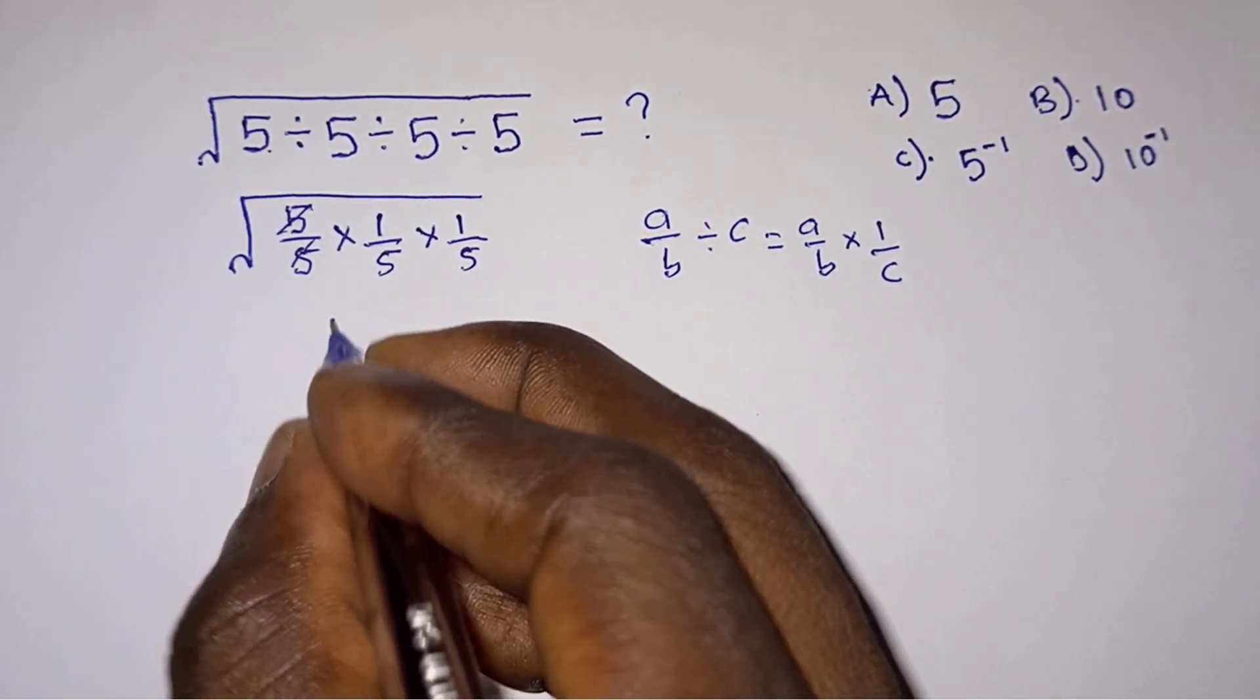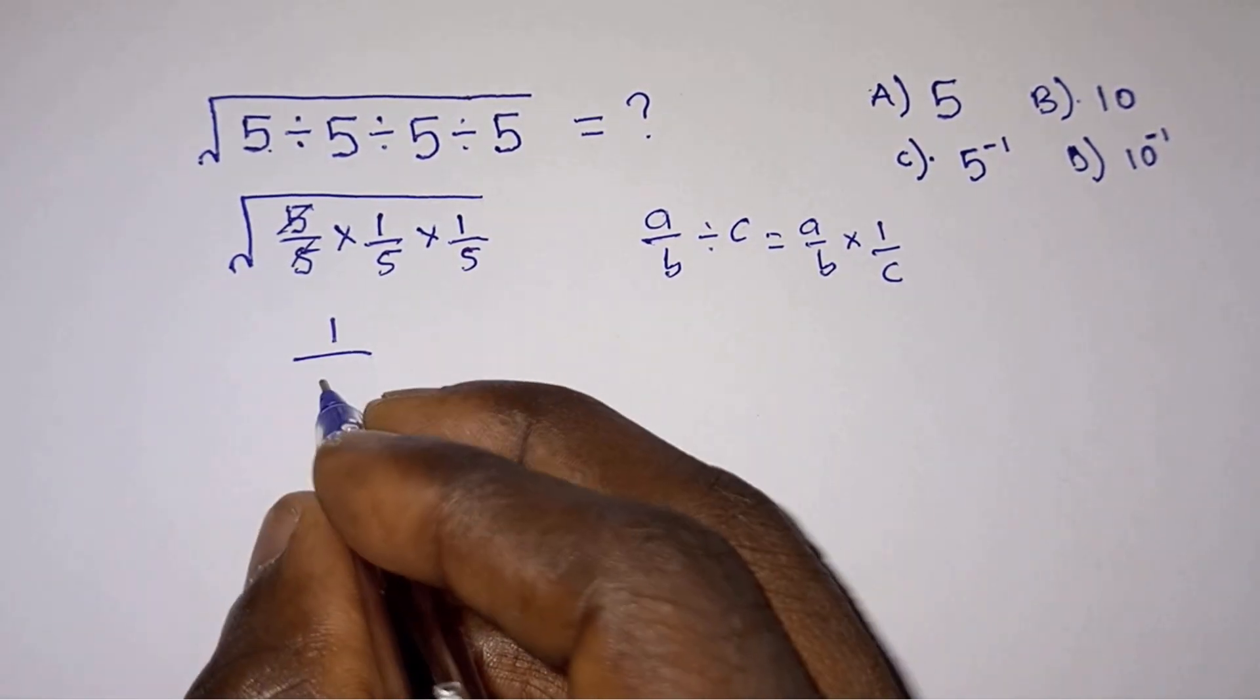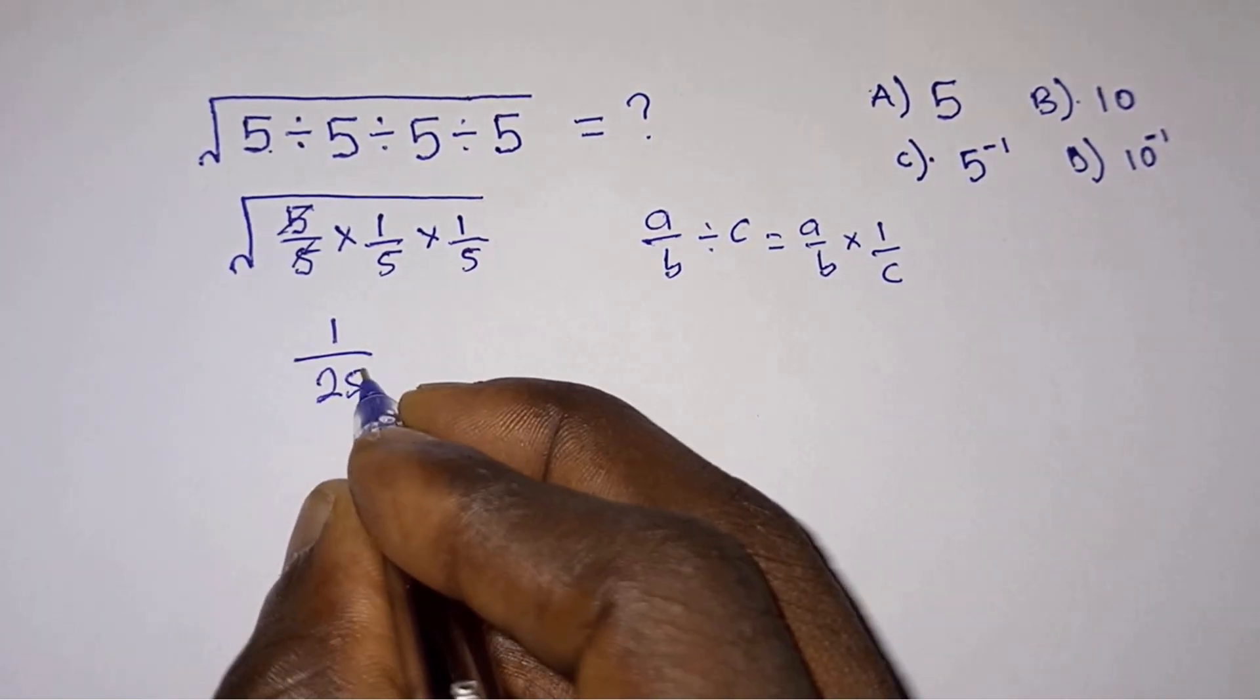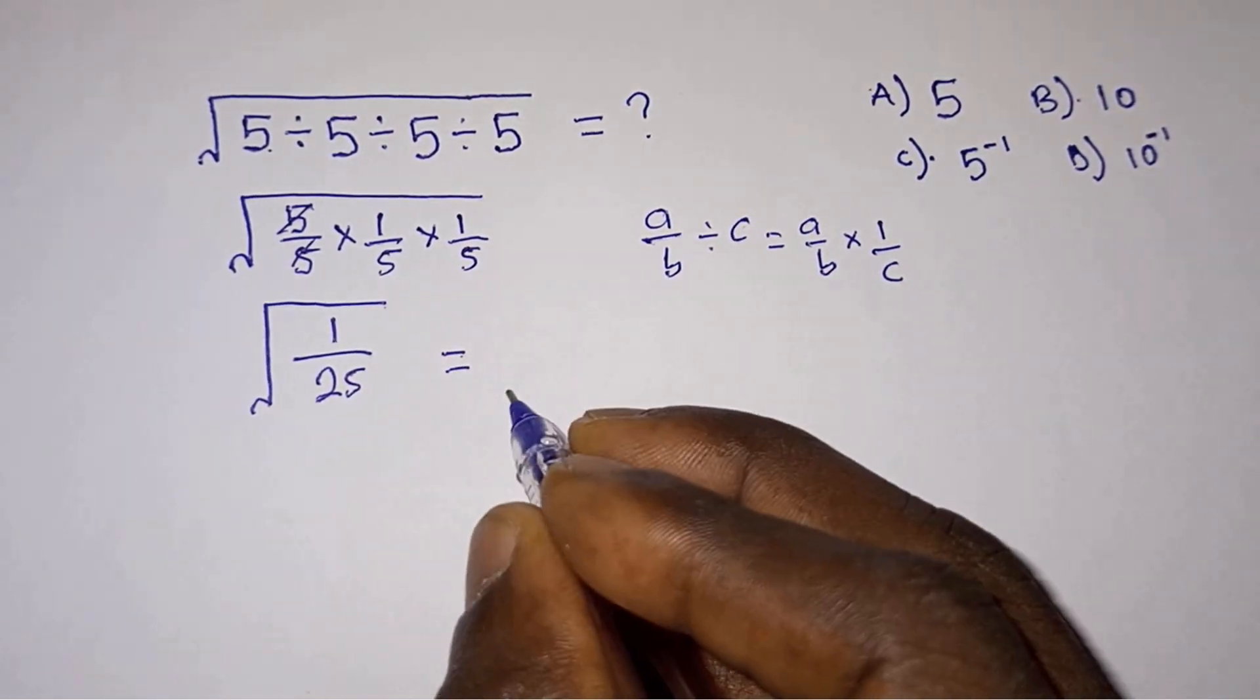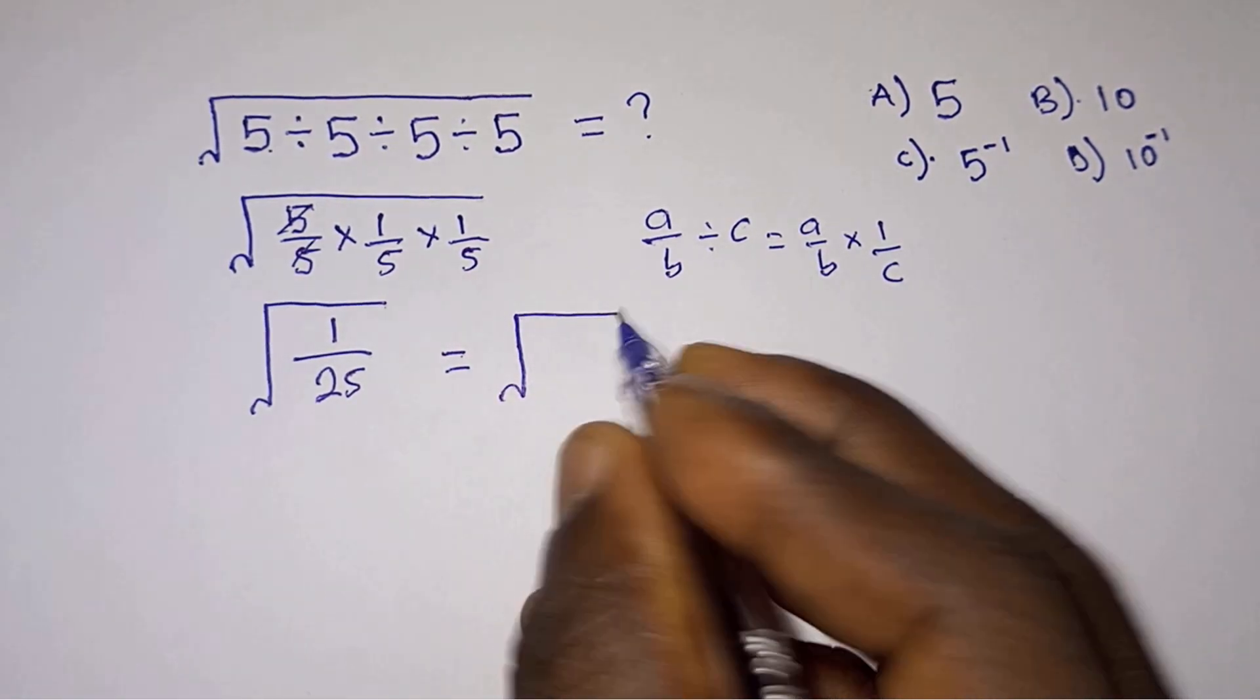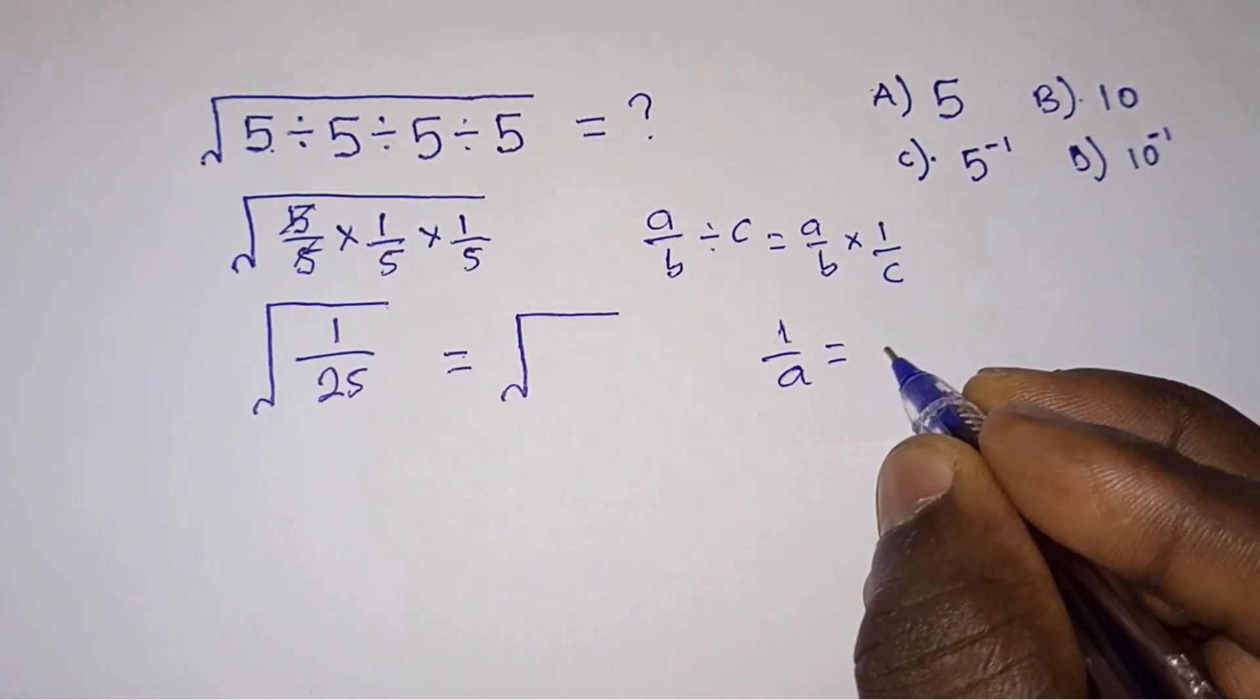This and this one will cancel; we have 1 times 1 times 1, which is 1 divided by 5 times 5, that is 25. So we have square root of 1 over 25, and this is the same as square root of...